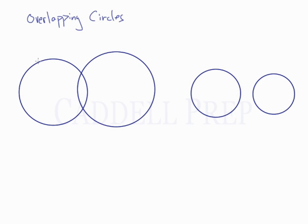Instead, the only two tangent lines we have are these external ones, or these ones on top and bottom, like this. So overlapping circles only have two tangent lines.